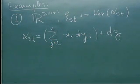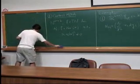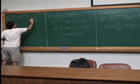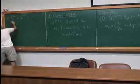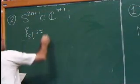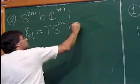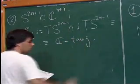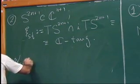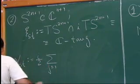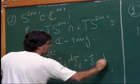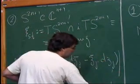The second example, which I want to keep throughout the lecture, is the sphere S^(2n+1), seen inside C^(n+1) as the unit vectors. The standard contact structure can be defined geometrically as the complex tangencies to the tangent bundle to the sphere — you take the tangent bundle and intersect it with J times that. It is also globally defined by a contact form, which one can write explicitly and restrict to the tangent bundle of the sphere.